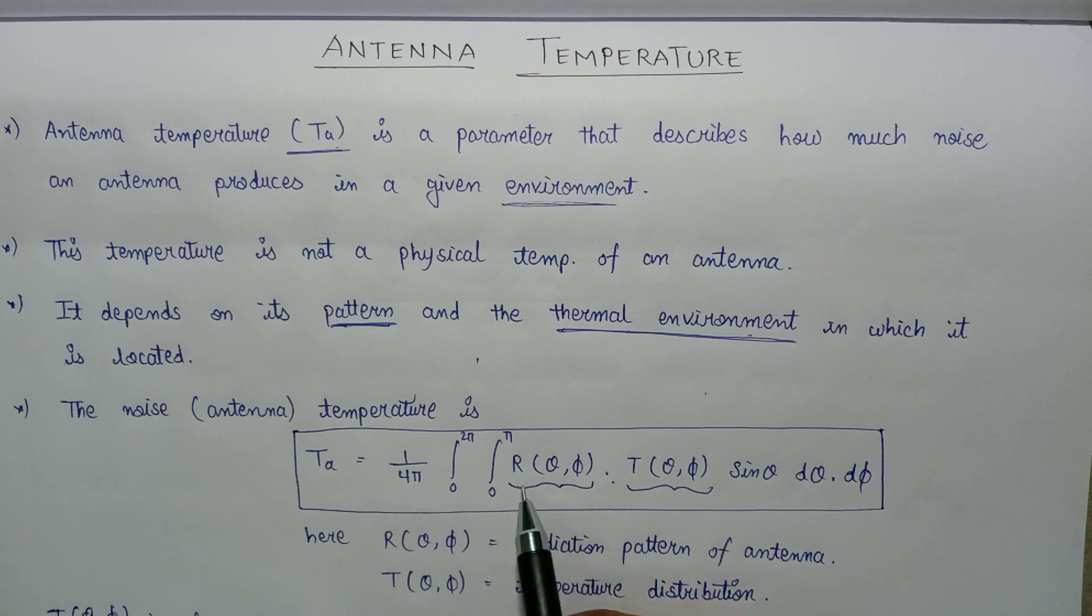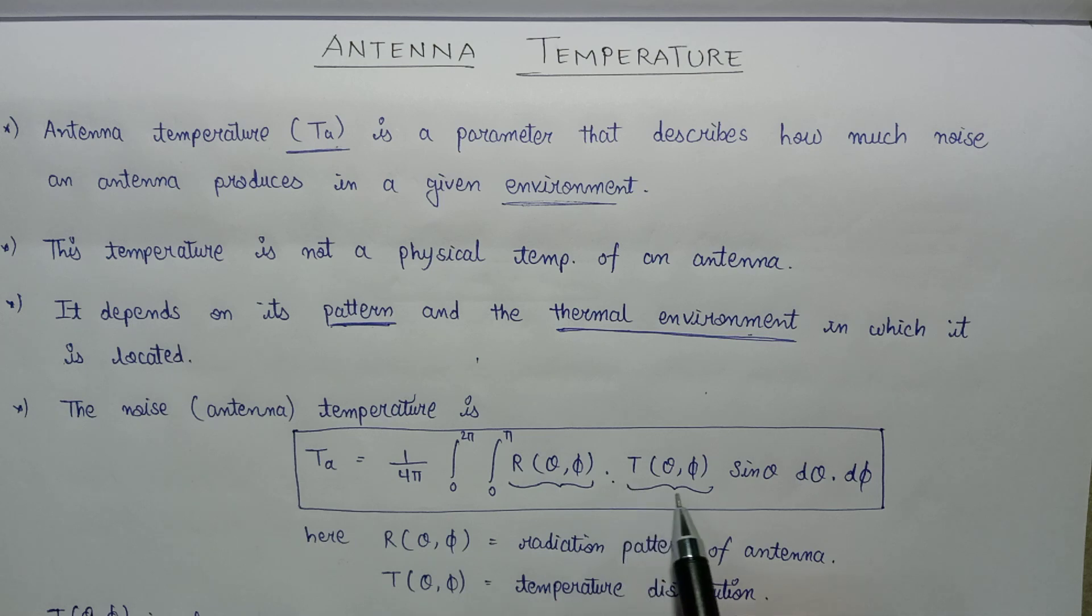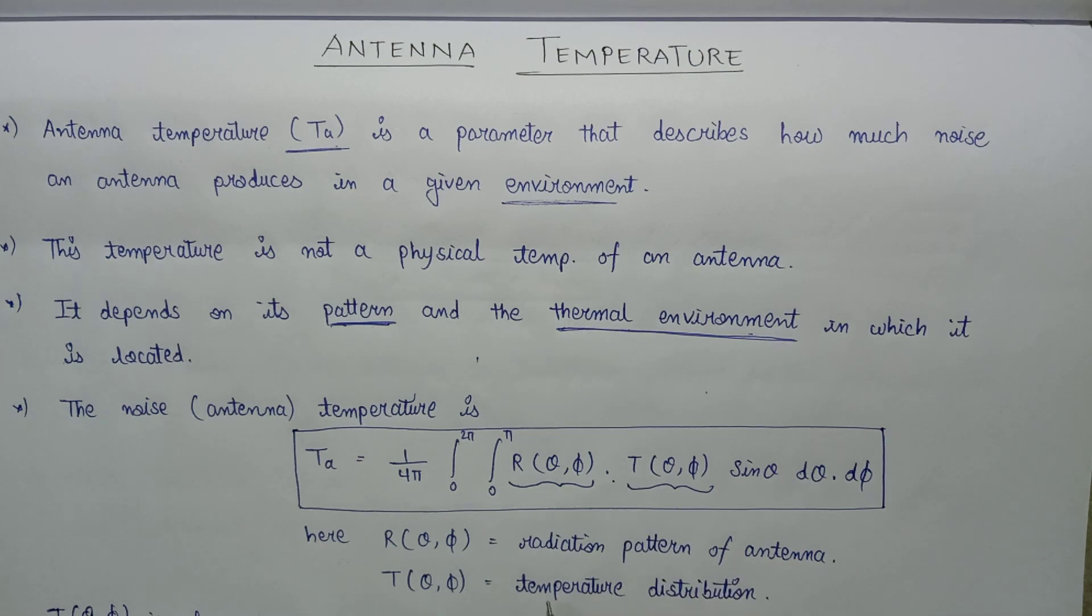If we talk about the factor R of theta phi, this factor represents the radiation pattern of an antenna. On the other hand, the factor T of theta phi represents the temperature distribution of an antenna.